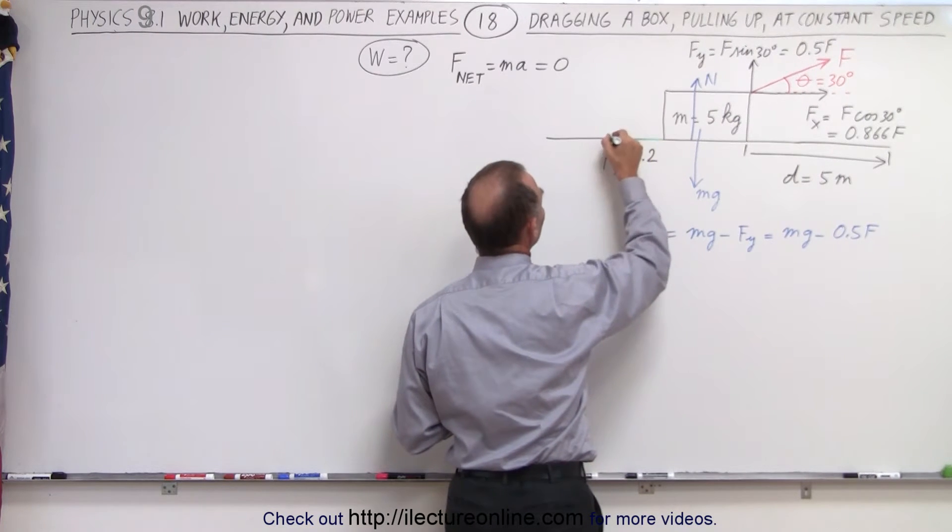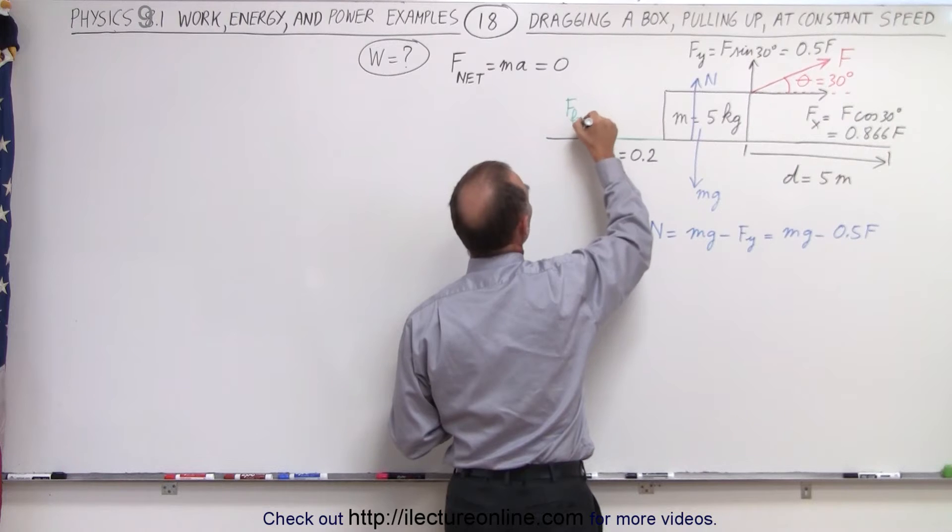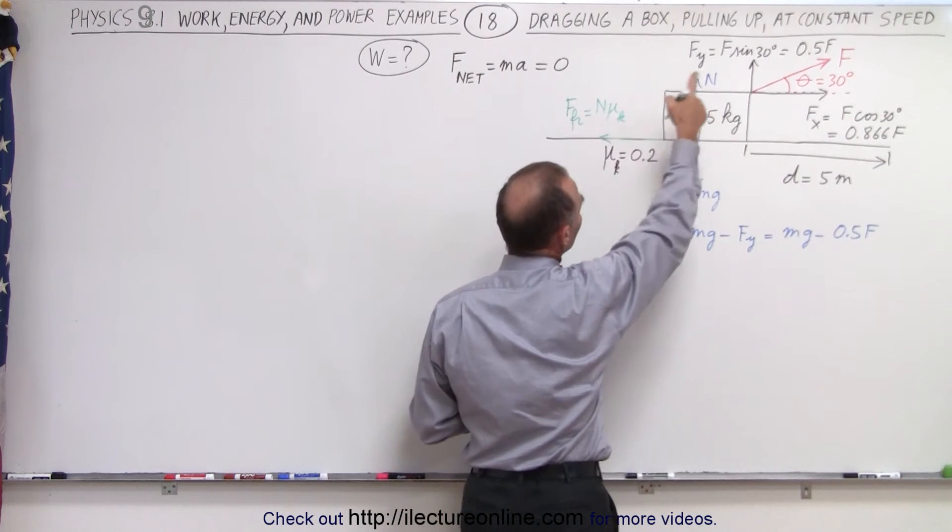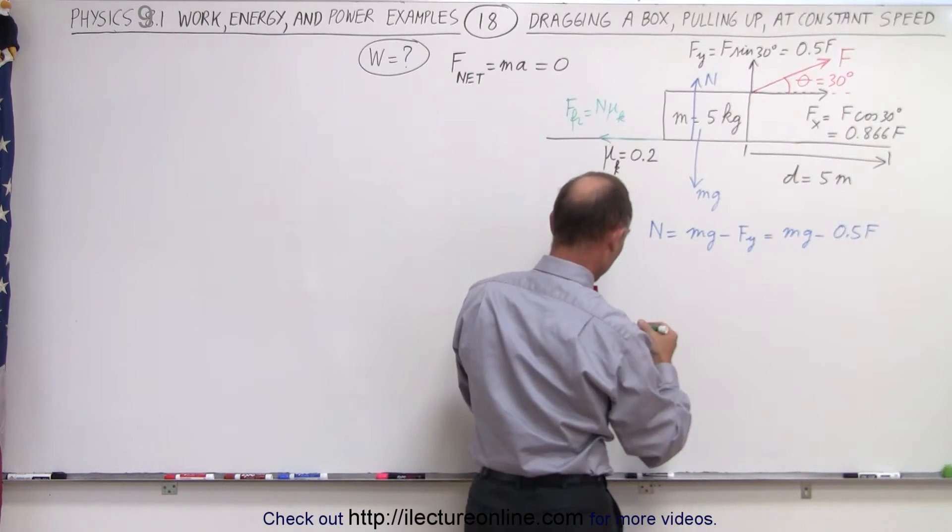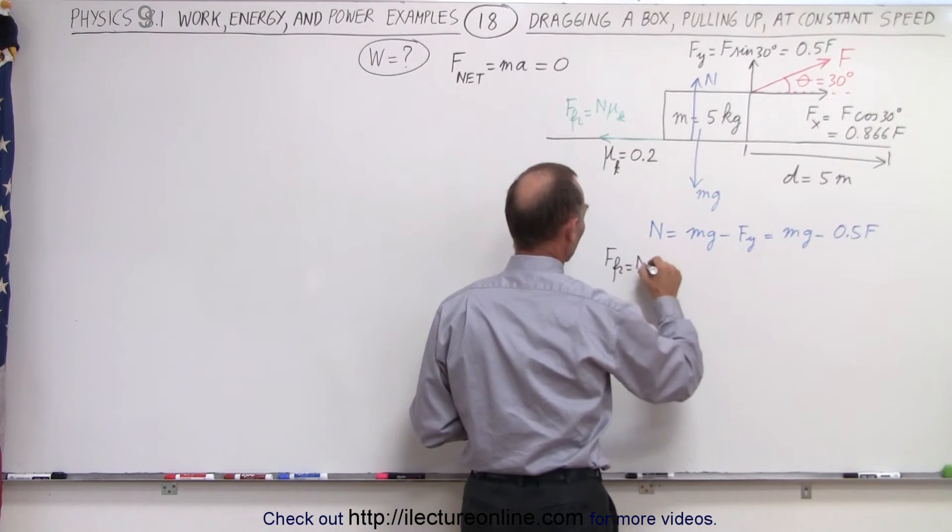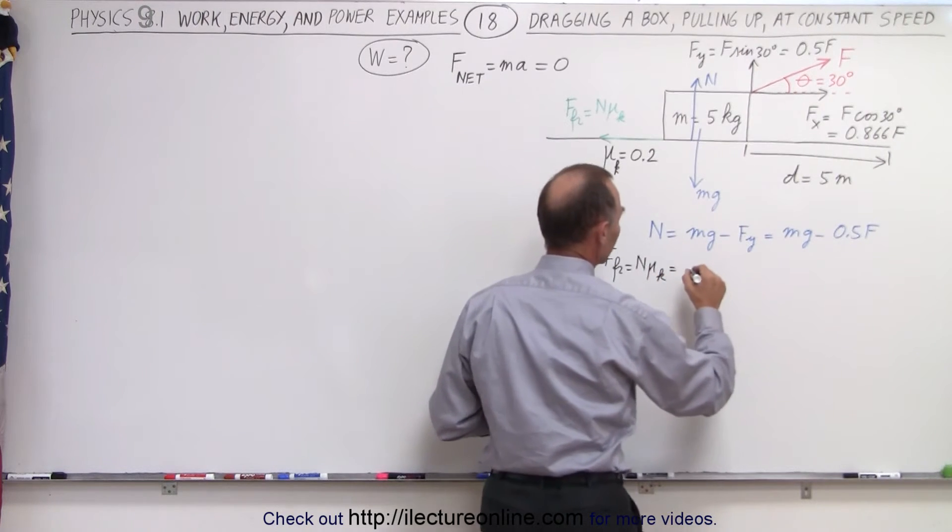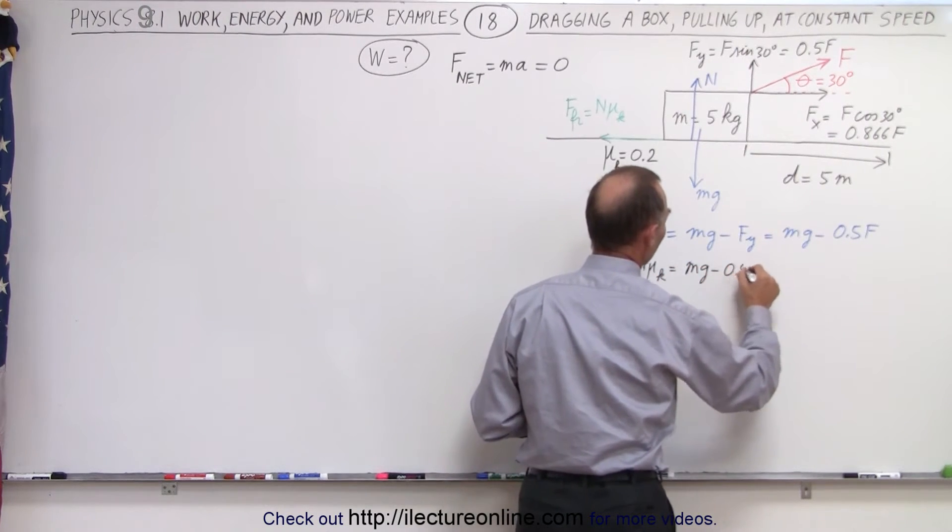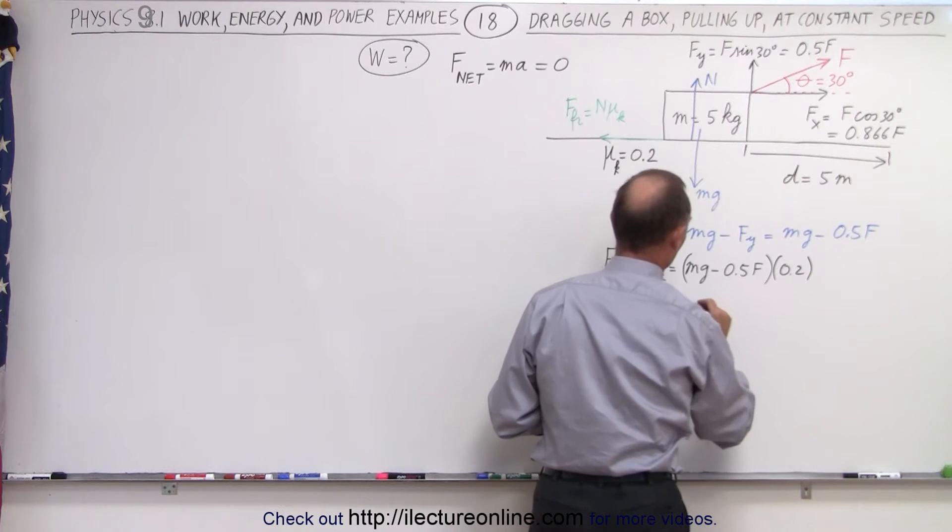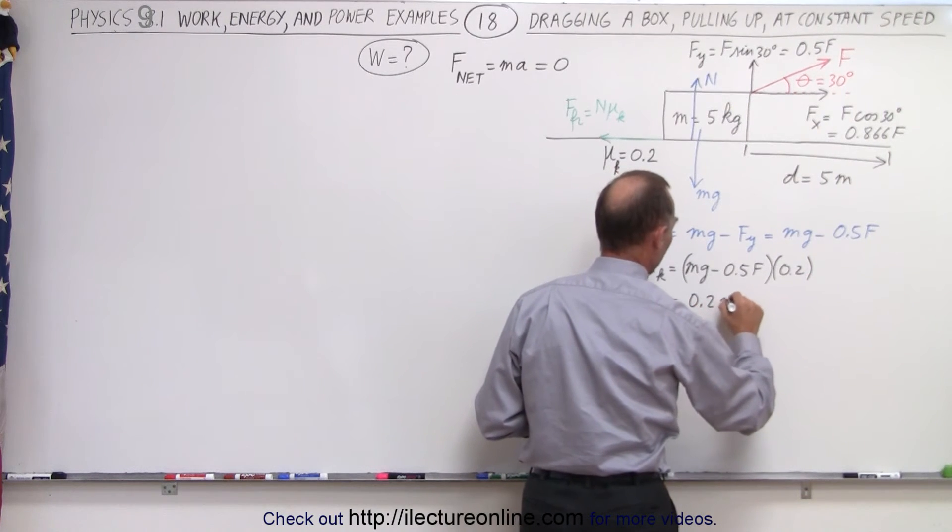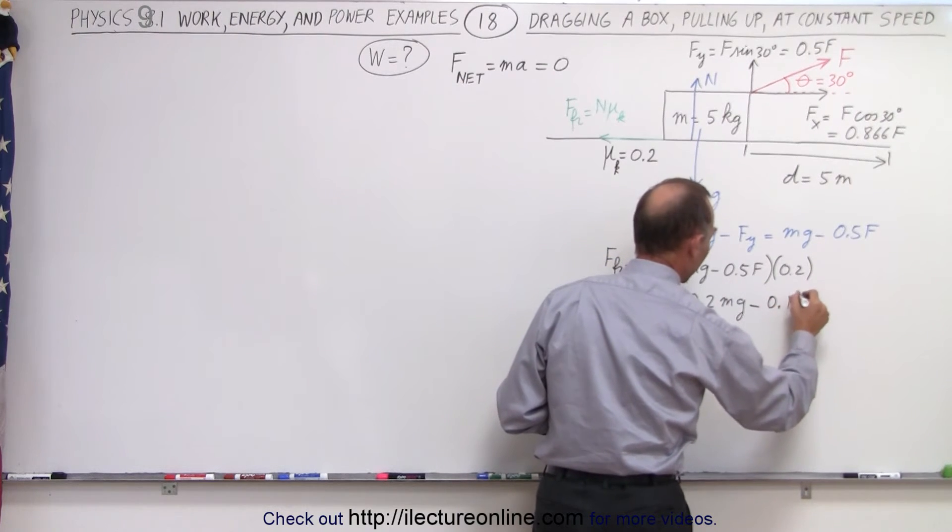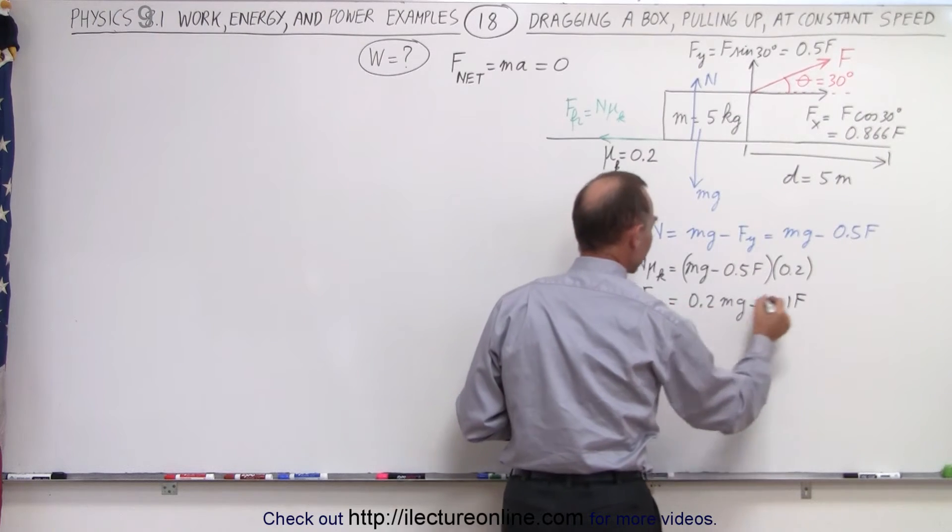Then we're going to have a friction force. Friction force is going to be directed in the opposite direction of motion. The friction force, by definition, is the normal force times μ, μ_k in this case. The normal force is equal to this one right here, which means that the friction force equals the normal force times μ_k, which is equal to (mg minus 0.5f) times 0.2, which equals 0.2mg minus 0.1f. That's the friction force acting on the block.